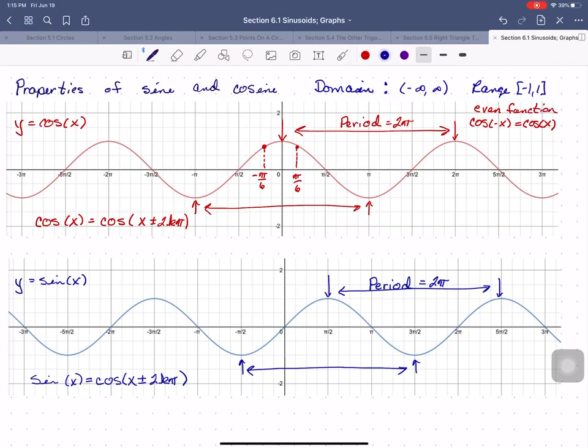If we go through the same exercise for sine—this would be negative π/6, this would be positive π/6—we can see the y values are the same in magnitude, but opposite in sign.